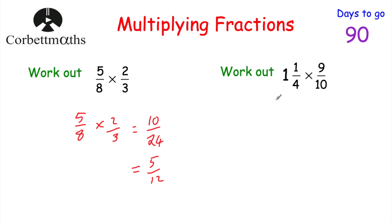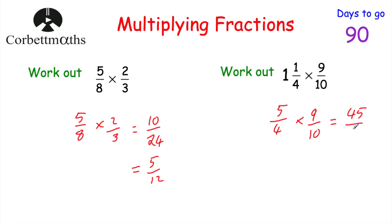Now let's look at mixed numbers. Thinking back to adding fractions, when we had mixed numbers we turned them into top-heavy fractions — and we're going to use the same technique. One times four is four, plus one is five, so one and a quarter is five quarters. Then we've got multiply by nine tenths. We just multiply numerators and denominators: five times nine is 45, and four times ten is 40. Both numbers are divisible by five — 45 divided by five is nine, 40 divided by five is eight — so that's nine eighths. Converting to a mixed number: how many eights go into nine? One, remainder one. So the answer is one and one eighth.